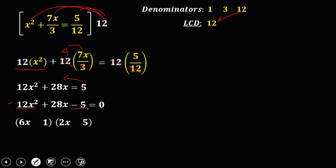To check which number is negative, use pyramid multiplication: 1 times 2x gives positive 2x, and 6x times 5 gives 30x. Adding these should give the middle term 28x. Therefore, the 2x is negative, so the factors are 6x minus 1 and 2x plus 5.